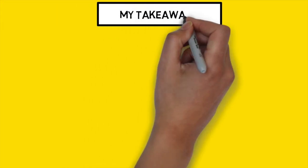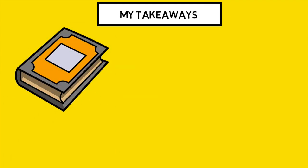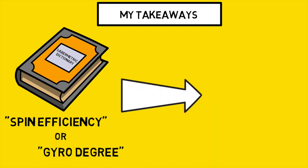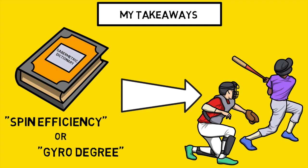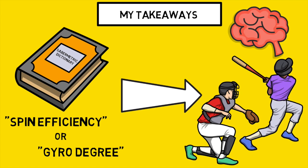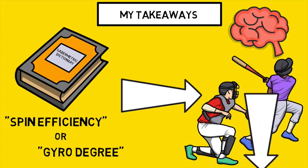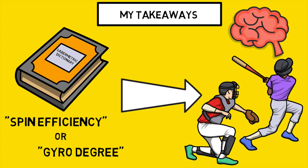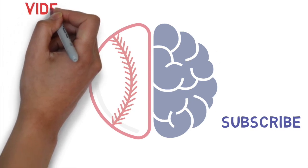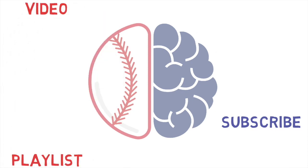If you're new here, I like to end every video briefly reviewing my main takeaways. There's a big difference between adding terms like spin efficiency and gyro degree to your sabermetric vocabulary and actually understanding how they can be applied on the field. My hope in showing you this example is that you're now able to understand what these metrics actually look like out on the field. Check out the description for links to videos I've done in the past on these topics, including spin efficiency, gyro degree, and a slider pitch design tutorial. Thanks for tuning in — please hit that subscribe button, and I'll catch you in the next one.